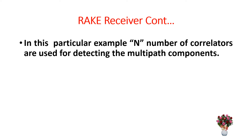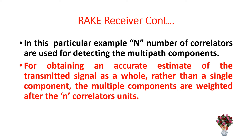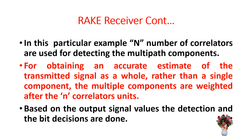Hence the rake receiver mainly makes use of multiple correlations for signal reception in mobile communication. In this example, n number of correlators are used for detecting the multipath components. To obtain an accurate estimate of the transmitted signal as a whole rather than a single component, the multiple components are weighted after the n correlator units. Based on the output signal values, the detection and bit decisions are done.